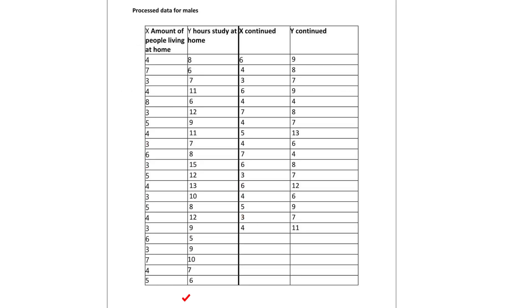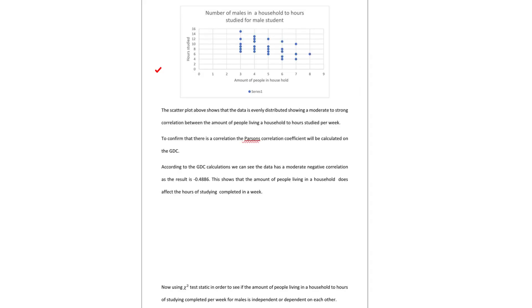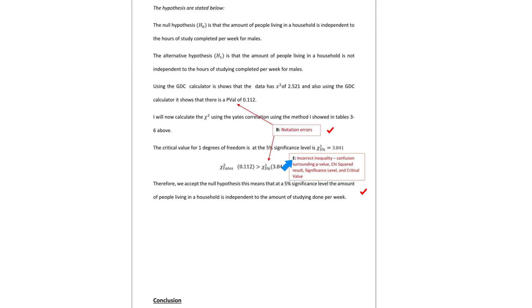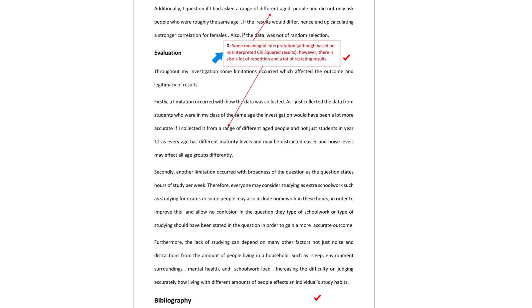For the chi-squared interpretation, I wrote: incorrect inequality, confusion surrounding p-value, chi-squared results, significance level and critical value — and also notation errors, with which the IB examiner agrees. The examiner liked what the student wrote about presentation. For criterion D, the examiner likes the student's interpretation here. My comment: some meaningful interpretation, although based on misinterpreted chi-squared results. However, there is also a lot of repetition and restating of results. The IB examiner agreed, and that's the IB examiner's mark for bibliography — good.